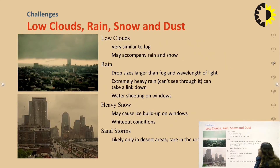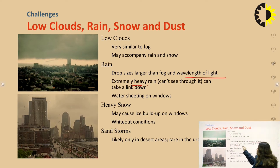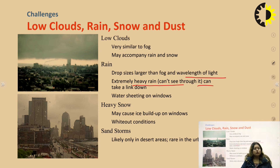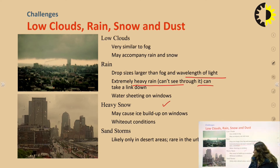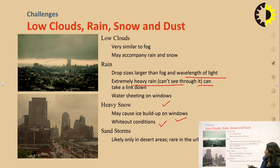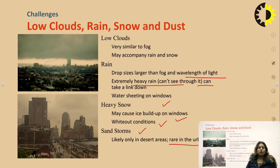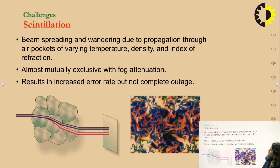The second challenge is low clouds, rain, snow, and dust. Low clouds are very similar to fog and often accompany rain and snow. For rain, the drop sizes are larger than the fog wavelength of light, and extremely heavy rain can bring a link down. Heavy snow can also cause signal loss and may cause ice build-up on windows and whiteout conditions, since the system is deployed behind windows. Sand storms are a challenge mostly in desert areas, whereas FSO is typically deployed in urban core areas.